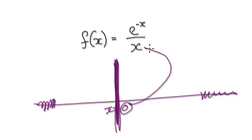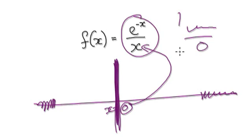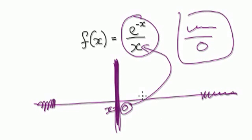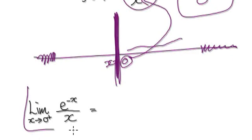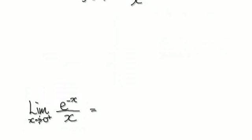At exactly x equals zero, the function breaks down because you're going to have something over zero — it breaks down. But you want to know what happens as it approaches zero. So really you want to know the limit as x tends to zero from the right-hand side.